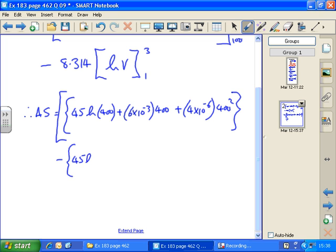With the limits of 100. 45 log 100, plus 6 times 10 to the minus 3 times 100, plus 4 times 10 to the minus 6 times 100 squared.